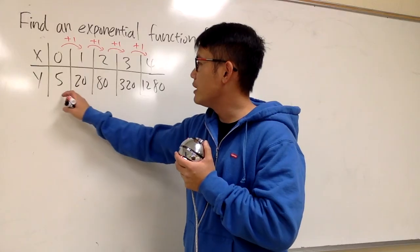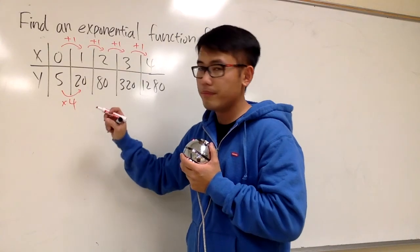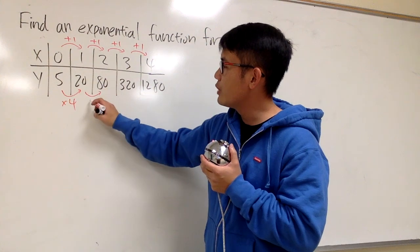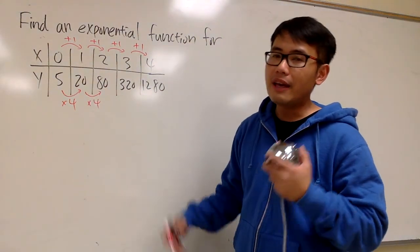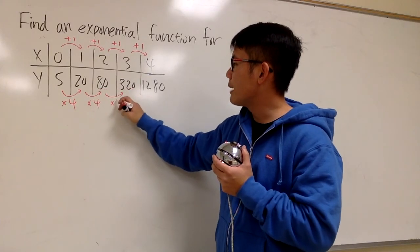From 5 to 20, we know we can say from here to here, we can multiply by 4. And then, from 20 to 80, once again we can look at this by multiplying by 4. And in fact, that's the pattern. Each time, we multiply by 4.